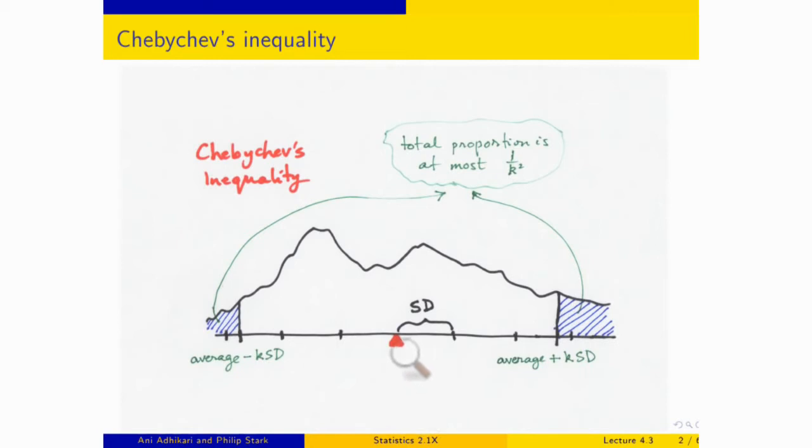And what we're doing is we're going some number of SDs on either side, an equal number of SDs on either side. And how many SDs we're going is called K. So we're going to the point average plus K SDs and average minus K SDs. Now in my picture, what does K look like? K looks like close to three but not quite. So there's one SD, two SDs, not quite three SDs, maybe two and three quarters, two and two thirds, something like that.